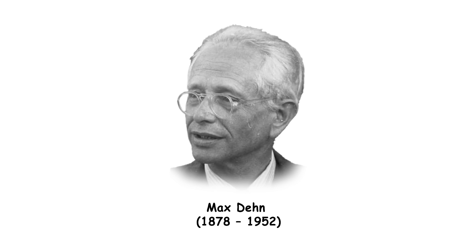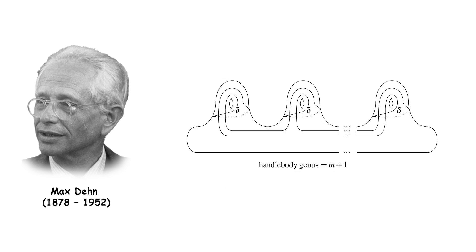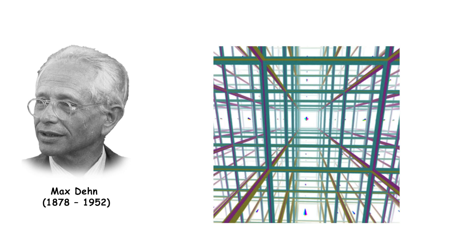Max Dehn was a German mathematician who made significant contributions to topology and group theory. He is known for Dehn's algorithm for solving the word problem in group theory and Dehn's lemma in topology, which is a foundational result in the study of three-dimensional manifolds.